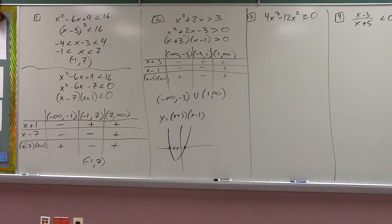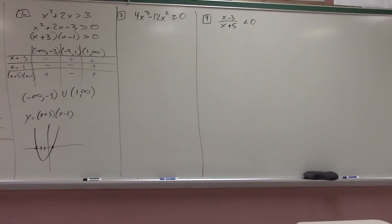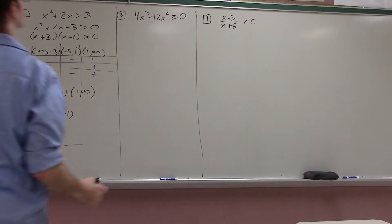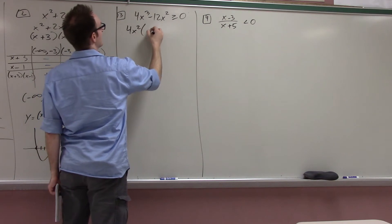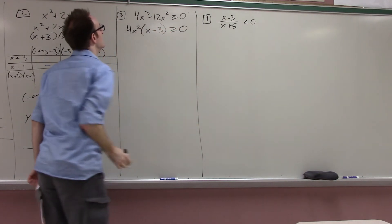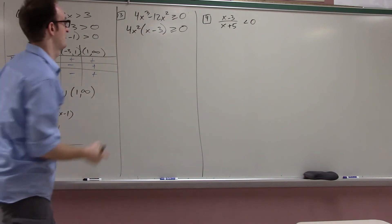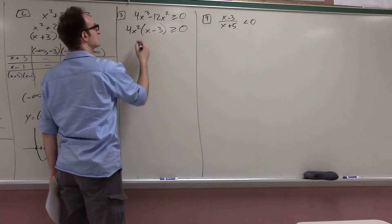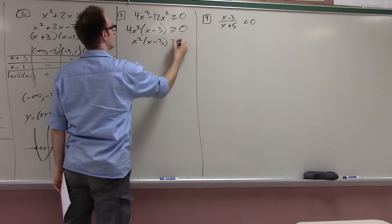4x cubed minus 12x squared — I'll factor out 4x squared and I'm left with x minus 3. The 4 can just be thrown away; you just divide both sides by 4. Now I have x squared times x minus 3 and I need to analyze the sign.